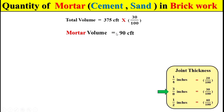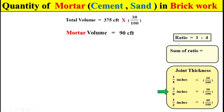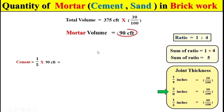To calculate the total quantity of cement and sand in this mortar volume, let's suppose the mortar ratio is 1:4, where 1 represents the total quantity of cement and 4 represents the total quantity of sand. First, we find the sum of the ratio by adding 1 and 4, which gives 5. In this total of 5 parts, 1 part represents cement. So we multiply 1/5 by the mortar volume to get the total quantity of cement, which is 18 cubic feet.